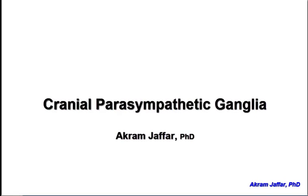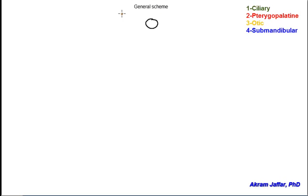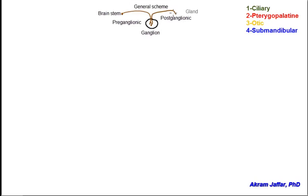The four cranial parasympathetic ganglia are the ciliary, pterygopalatine, otic, and submandibular ganglia. Each ganglion has a parasympathetic root which carries preganglionic fibers from the cells of origin in a brainstem nucleus. The preganglionic fibers synapse in the ganglion, and the postganglionic fibers are distributed to glands or smooth muscle cells.